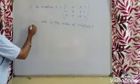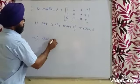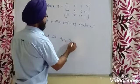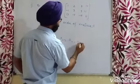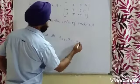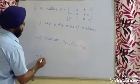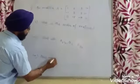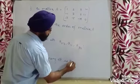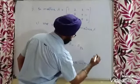Second question: what are the elements A23, A11, and A32? Third question: how many elements or entries are there in matrix A? These are three basic questions.